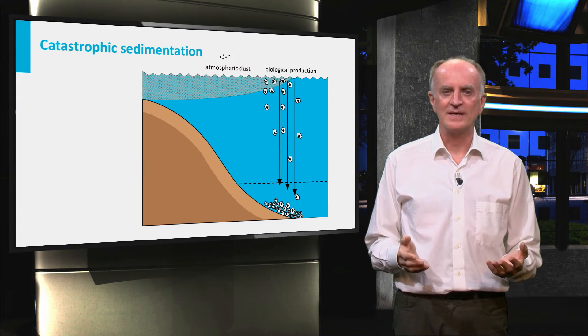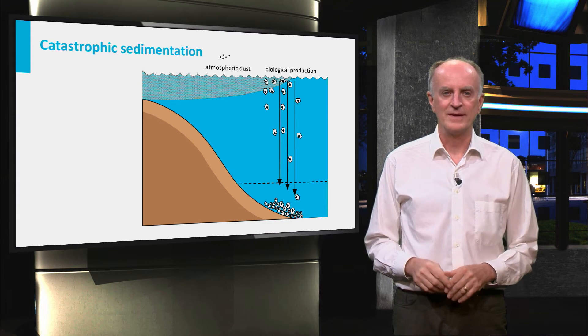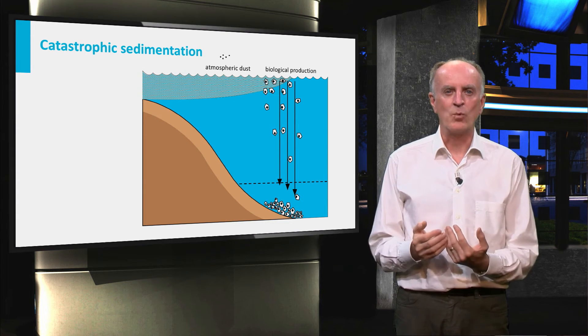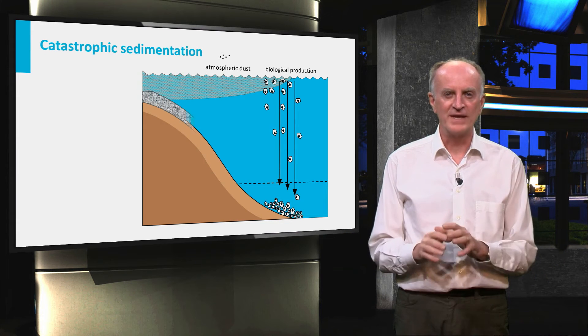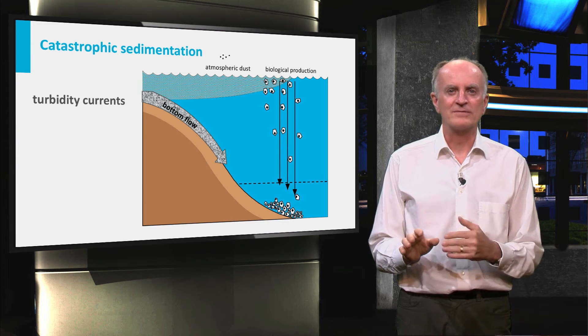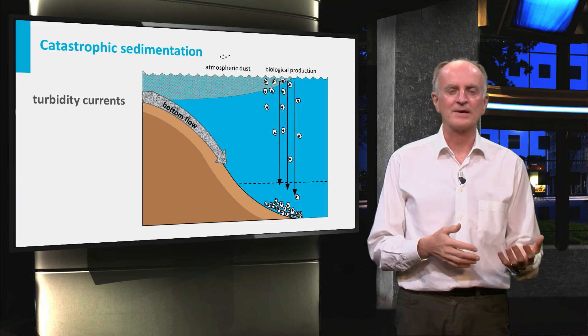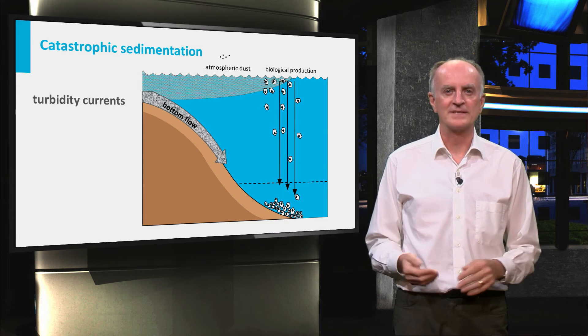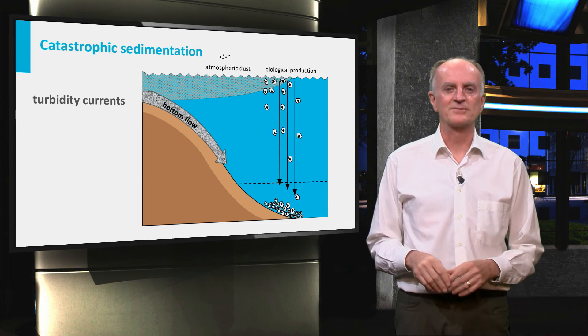But sedimentation in the deep ocean is not always calm and monotonous. Once in a while the quiet is disturbed by the catastrophic arrival of sediments from the shelf. Within a very short time of days, a huge amount of sediments are delivered to the deep basins. These sediment-loaded currents are called turbidity currents and are completely different from the background sedimentation we have described until now.